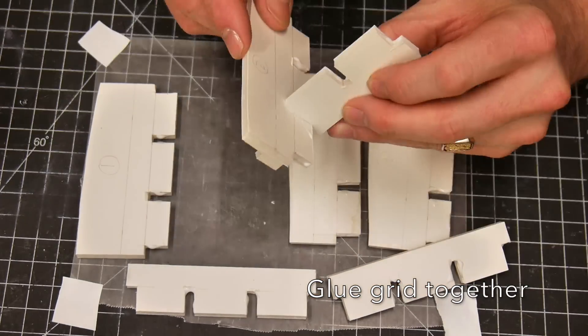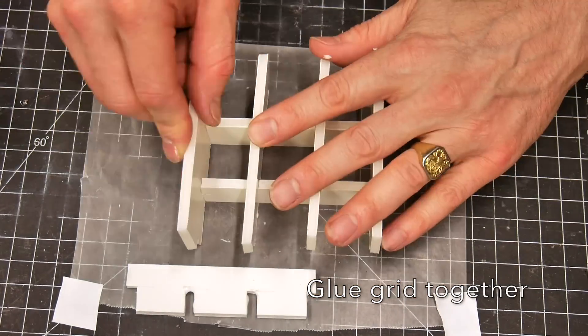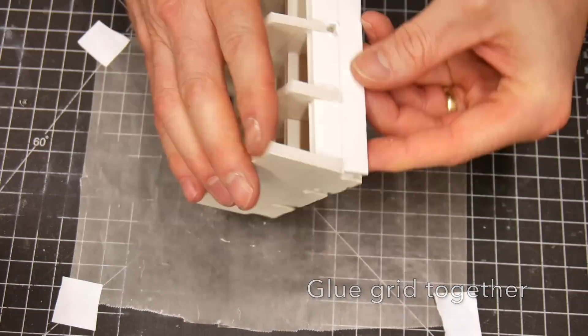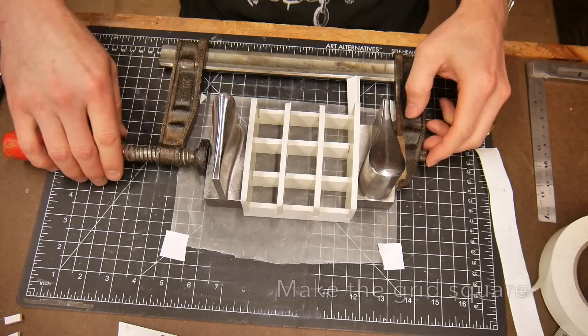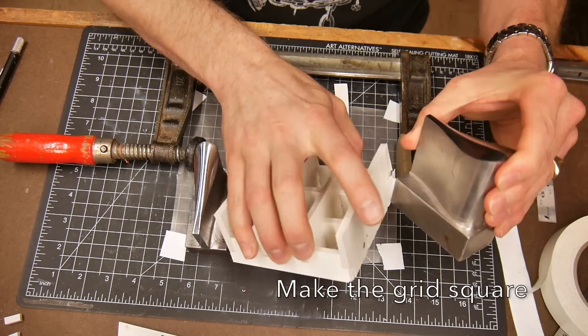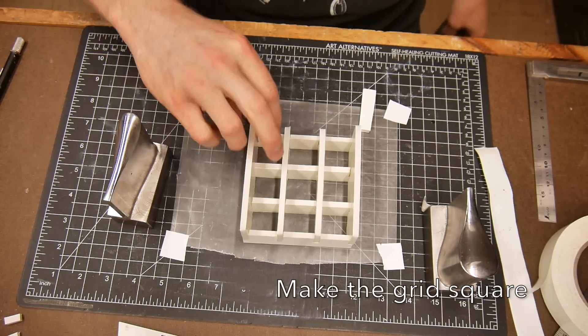And the beauty of white glue here in this case is that it doesn't just set up instantly like hot glue does. It allows me to square everything up and make it nice and true and it gives me great strength.